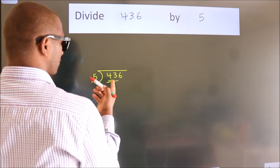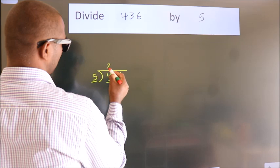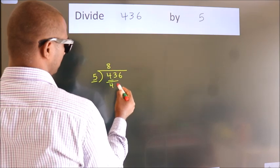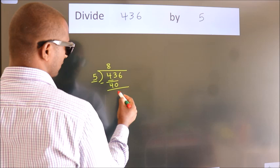A number close to 43 in 5 table is 5 8s 40. Now we should subtract. We get 3.